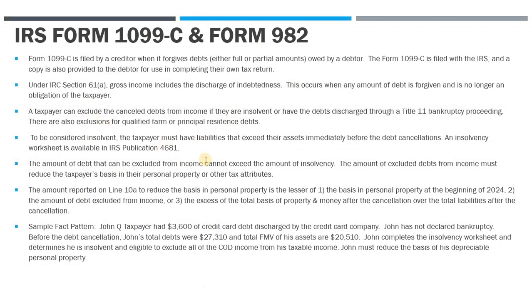Let me go through the slide first, then we'll look at the Excel workbook and see how everything is entered on the return. The 1099-C is filed by a creditor — somebody that you owed money to — when it forgives debts, either full or partial amounts owed by the debtor. Like all other 1099s, it's filed with the IRS and you as the recipient get a copy, which you use to complete your tax return.